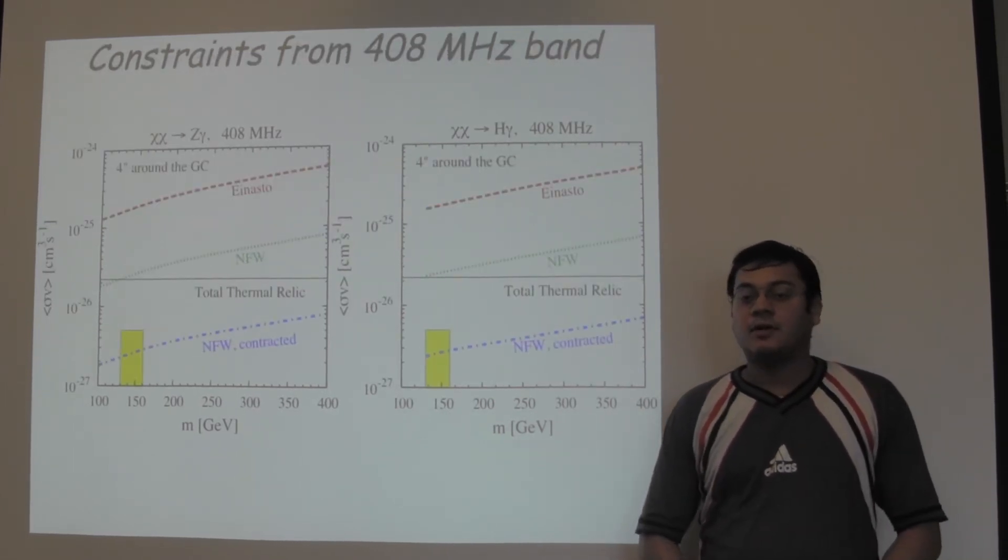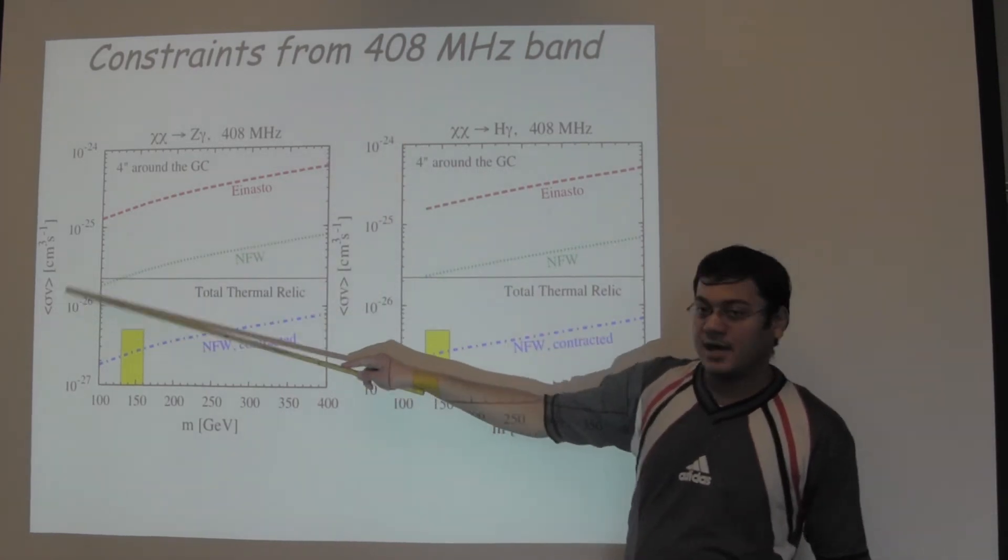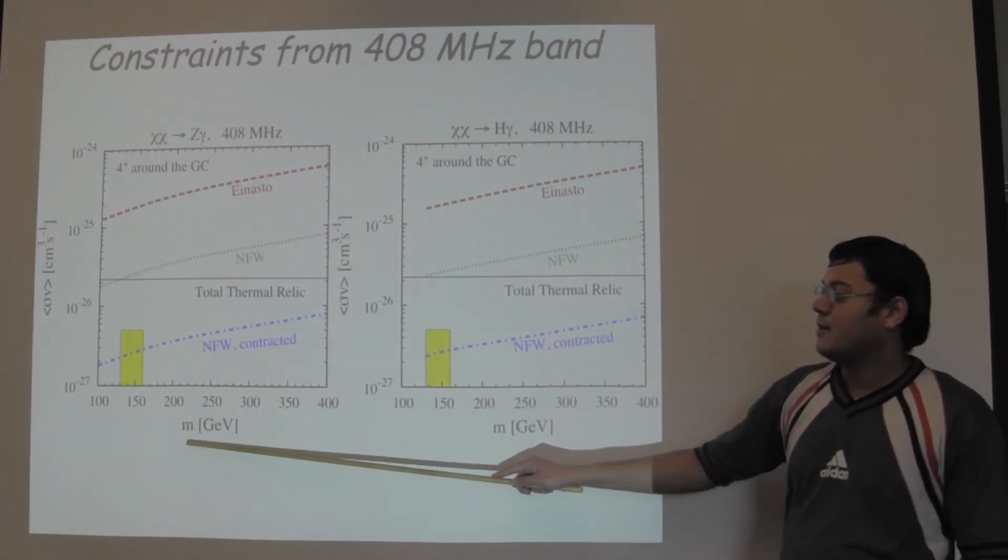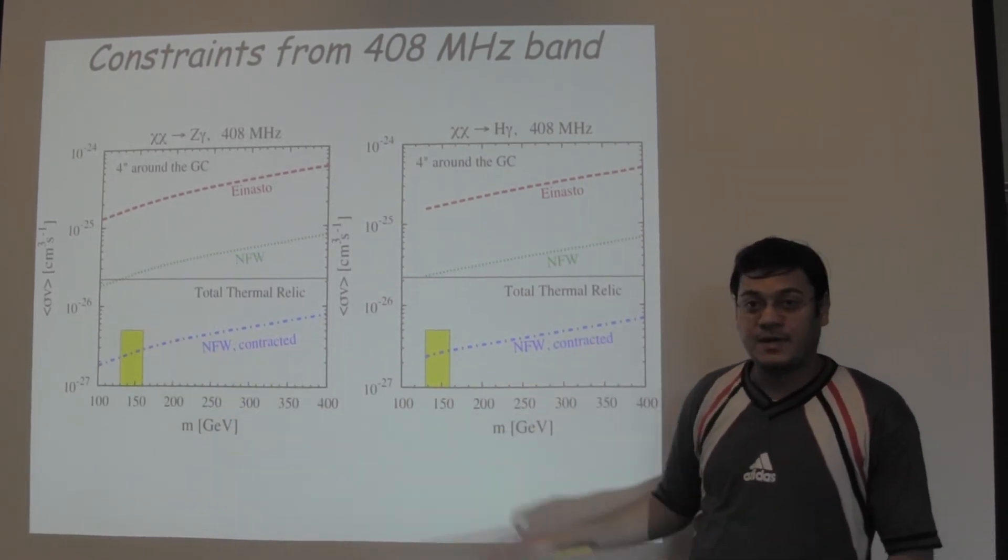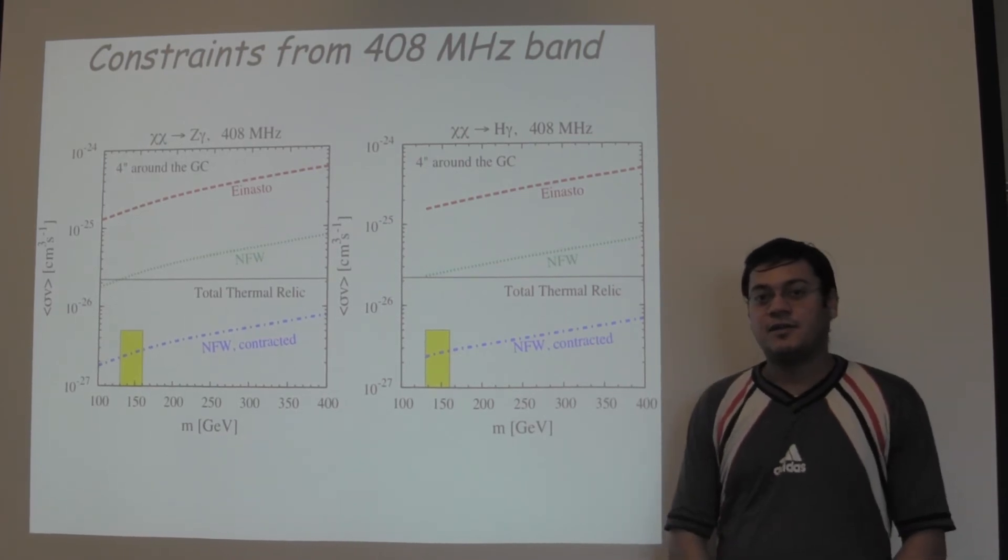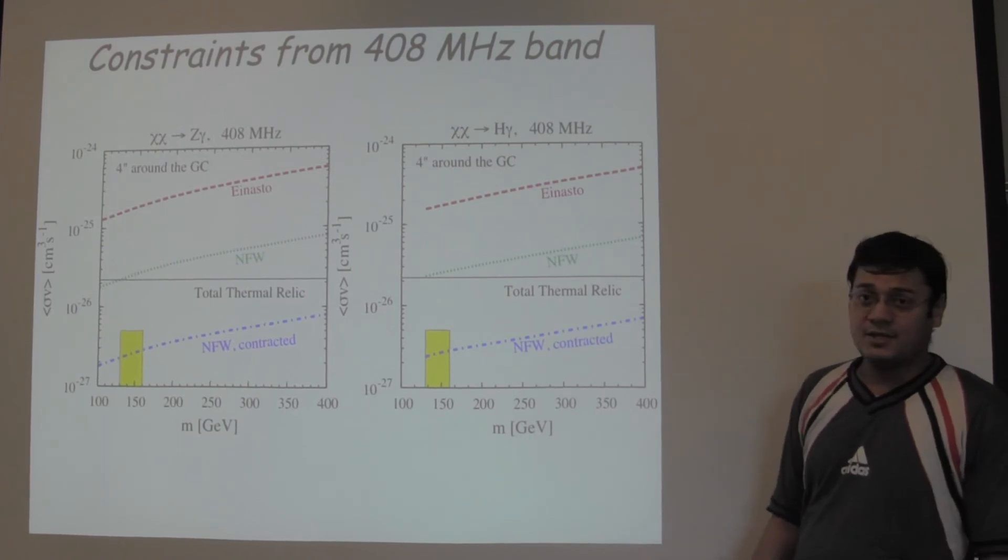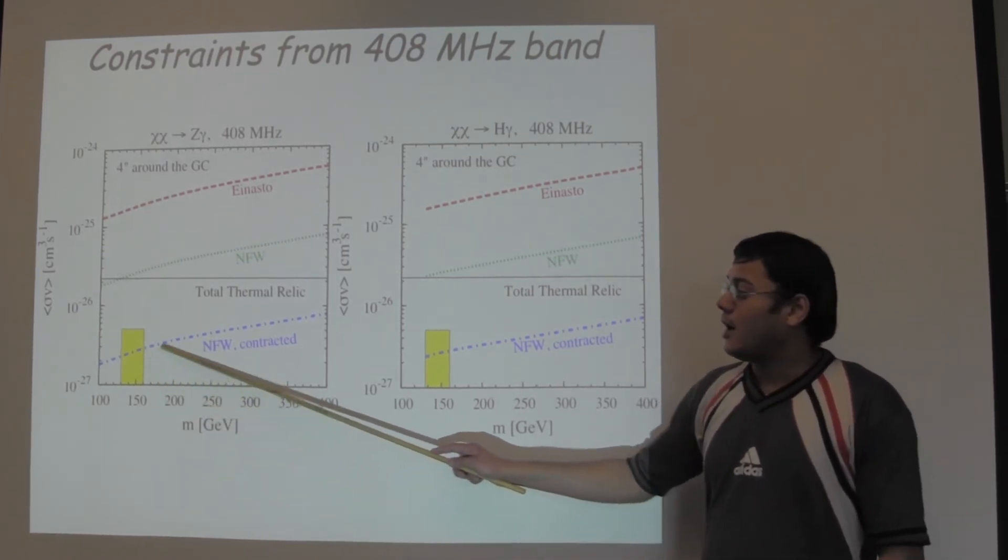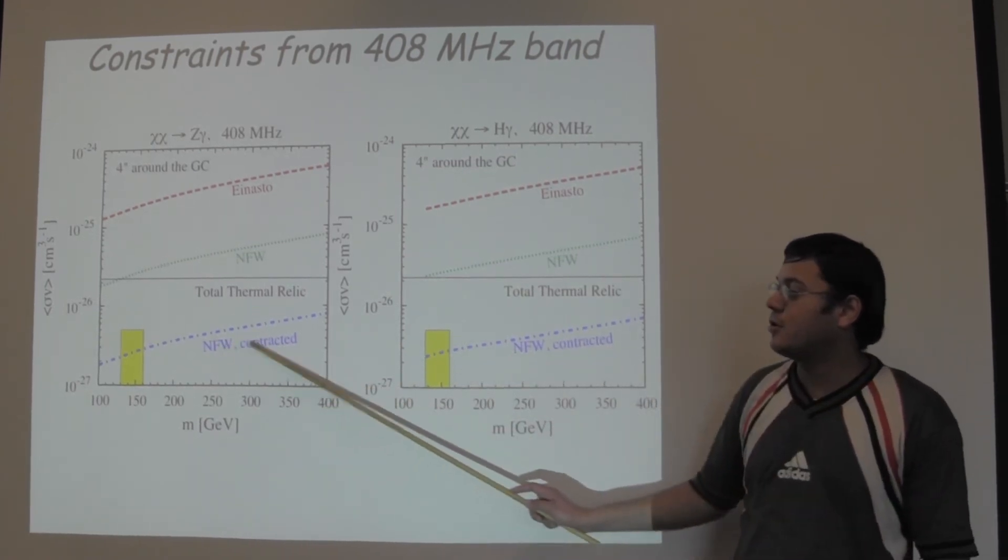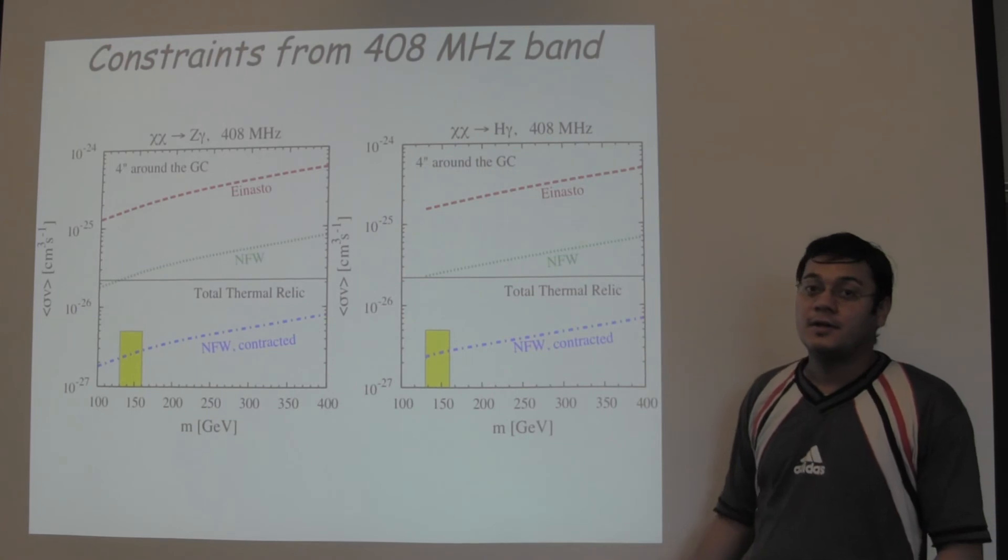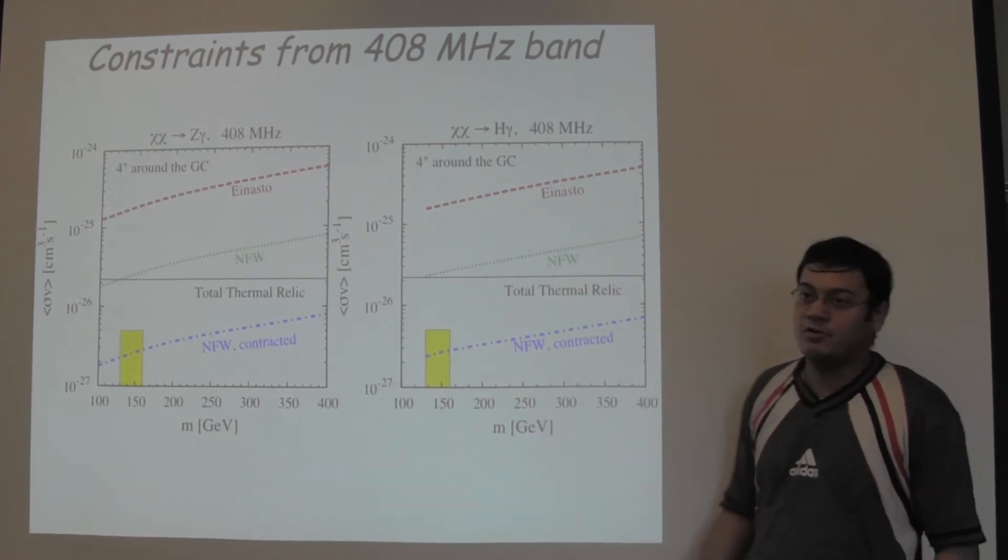Using the upper limit of the synchrotron flux density at this region, we try to find the constraints in the dark matter annihilation cross section sigma V versus the dark matter mass plane. In this shaded region, we show the dark matter annihilation cross section that is preferred if this 130 GeV line arises from dark matter annihilation. As can be seen, with the current upper limit, the line is in slight tension if it arises from a NFW contracted dark matter profile. The constraints for the other profiles, the NFW profile and the EINASTO profile are about an order of magnitude weaker.